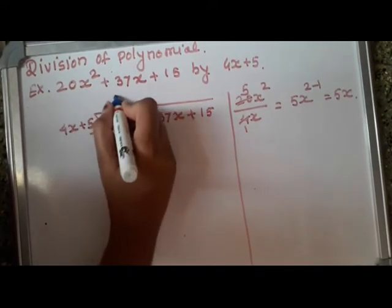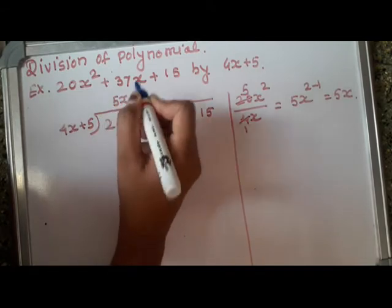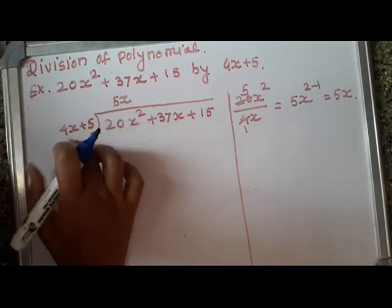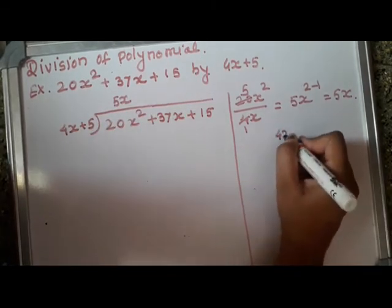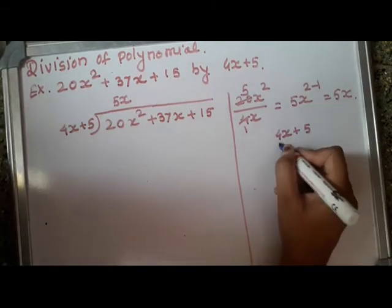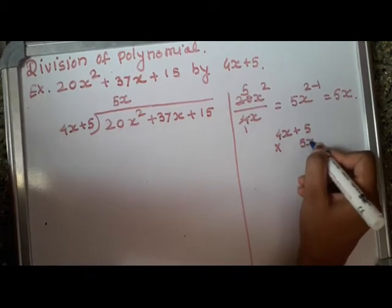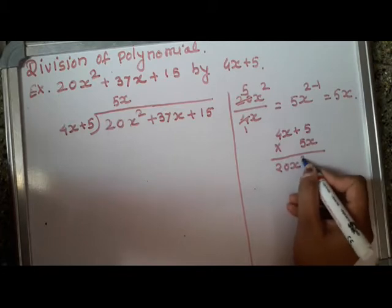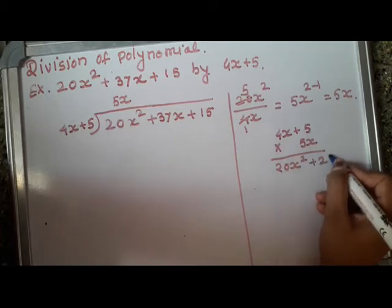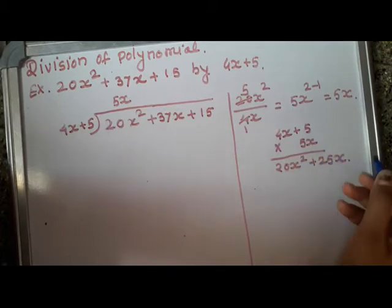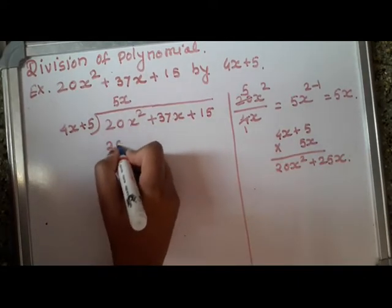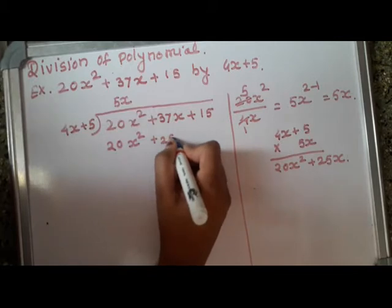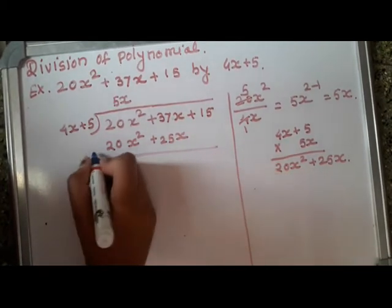It will become part of quotient 5x. Now to get the number over here I will multiply these two numbers, that is 4x plus 5 multiplied by 5x, that will equal to 5, 4s are 20, x into x is x square, plus 5, 5s are 25x.